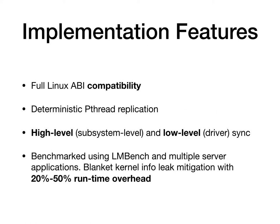We implement our KNVX prototype on top of Linux, keeping full Linux ABI compatibility even for multi-threaded applications. For compatibility, we support two models of subsystem replication, allowing us to easily maintain I/O consistency between the variants using high-level subsystem replication, while also allowing us to run as much diversified code in both variants using a low-level replication mechanism. We achieve this blanket kernel infoleak mitigation at a runtime overhead of 20–50%.